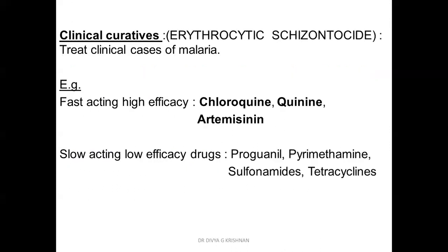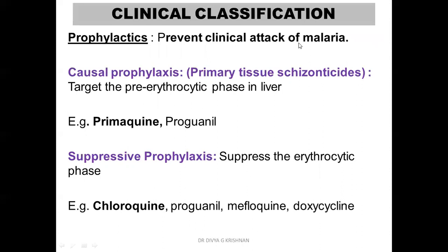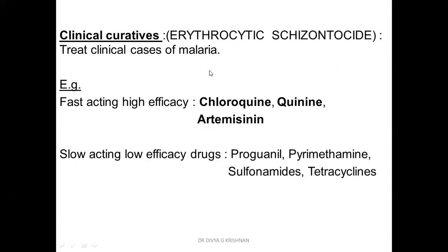Then come the clinical curatives, also called erythrocytic schizonticides — they destroy the merozoites in the RBCs and can treat clinical cases of malaria. There are two types: fast-acting high-efficacy ones like chloroquine, quinine, and artemisinin; and slow-acting low-efficacy ones like proguanil, sulfonamides, and tetracyclines. You can see that primaquine is mainly a prophylactic drug, whereas chloroquine's principal use is as a clinical curative, though it also has suppressive prophylactic action.